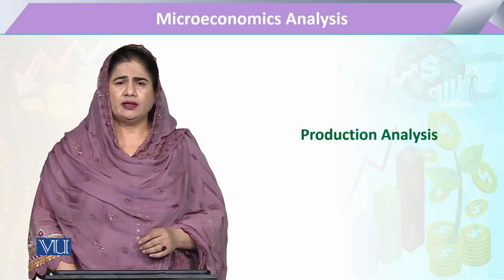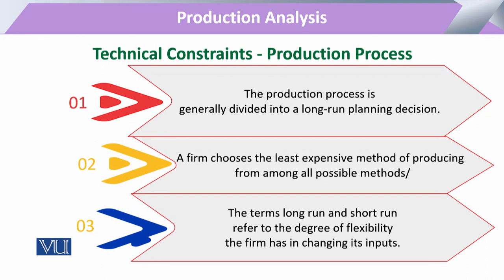This chapter is on production analysis and we are going to study the production process. The production process basically entails the transformation of all inputs into output. It also includes all the decisions related to this transformation — at which time which decision has to be taken, which input has to be purchased, and in which quantity it has to be utilized. All these decisions are included in the production process.